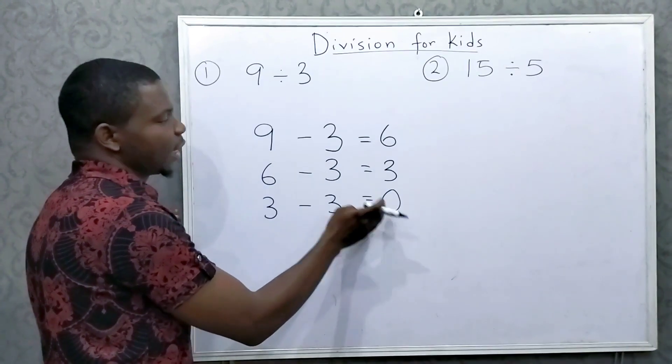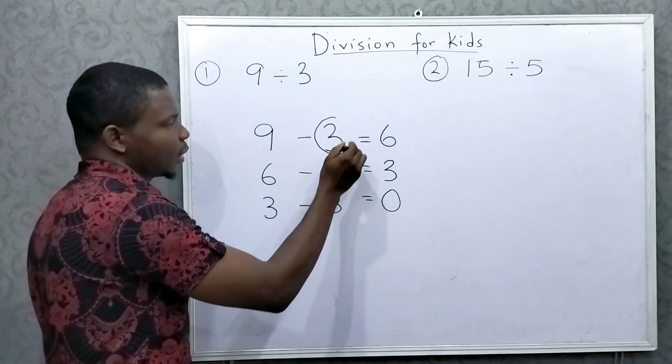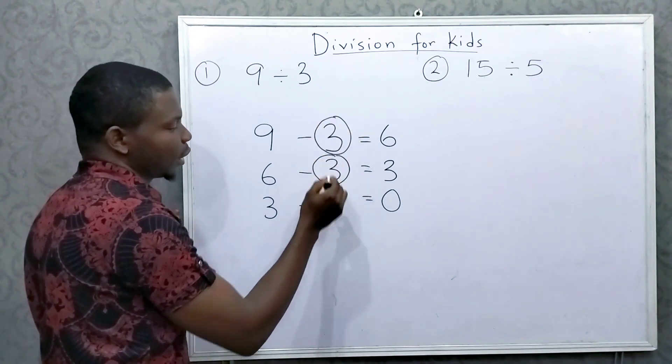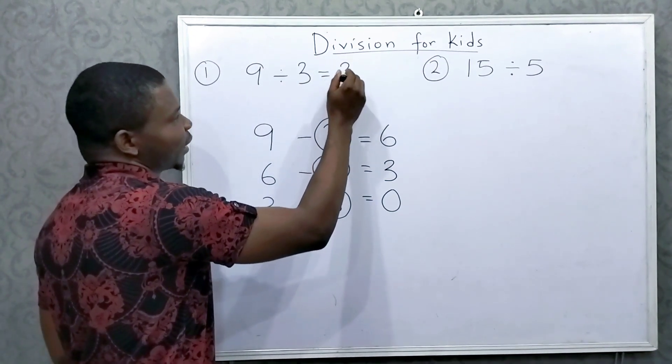So when I get to 0, I'll stop. Then I'll count how many times did I subtract 3. That is 1, 2, and 3. So 9 divided by 3 is equal to 3.